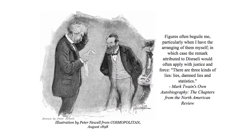Mark Twain once famously noted, there are three kinds of lies: lies, damn lies, and statistics. Numbers are used as a way of keeping track of reality — they are a model. Sometimes these numbers can be essential to understand and solve problems, but they can also be a way of distorting the real world that can deceive ourselves and others.